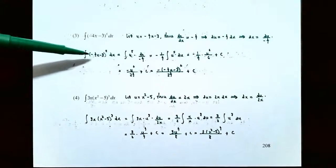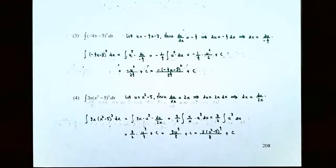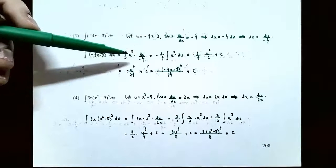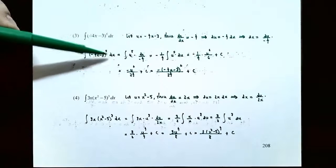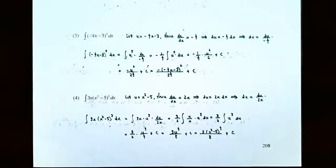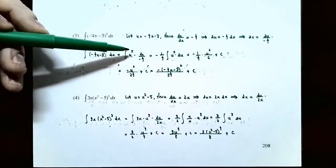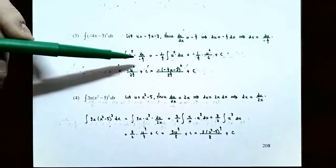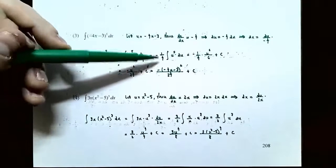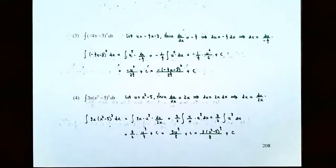We need to replace dx in terms of u. Solving for dx: dx equals du divided by negative 4. So the integral of (negative 4x minus 3)^5 dx becomes the integral of u^5 times (du / negative 4). The negative 4 is just a constant in the denominator, so we take negative 1/4 outside the integral sign, leaving the integral of u^5 du.